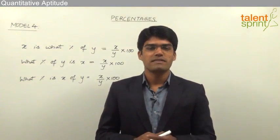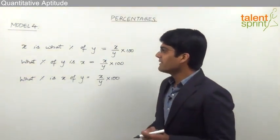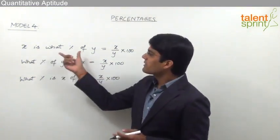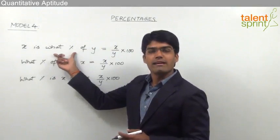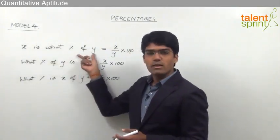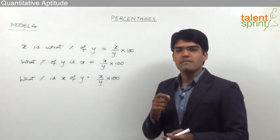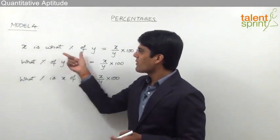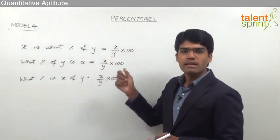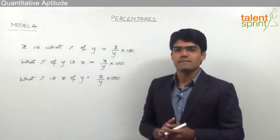Let us now take the fourth model from percentages. The one very important concept that we need to understand here is: x is what percent of y. This particular model is very frequently asked in data interpretation. X is what percent of y can always be taken as x divided by y into 100. Whenever we see a question in the format of x is what percent of y, the answer should always be x upon y into 100.